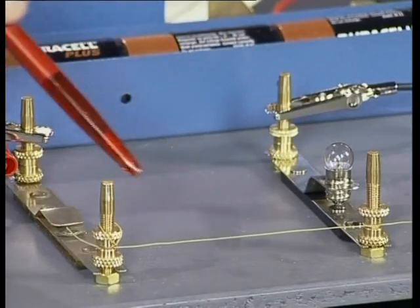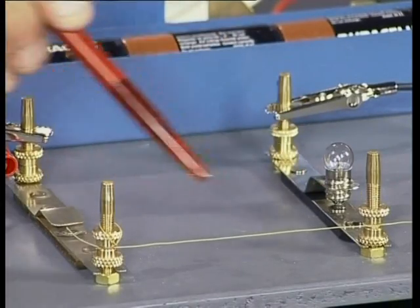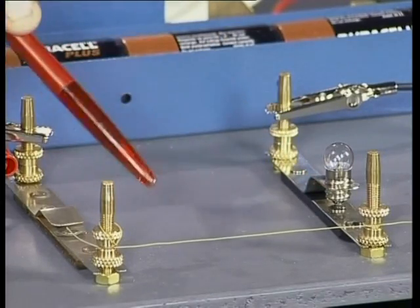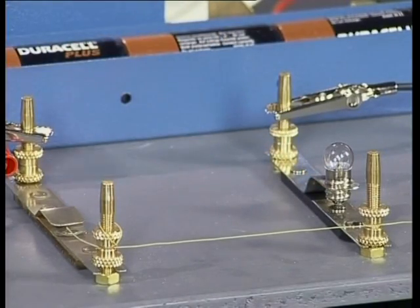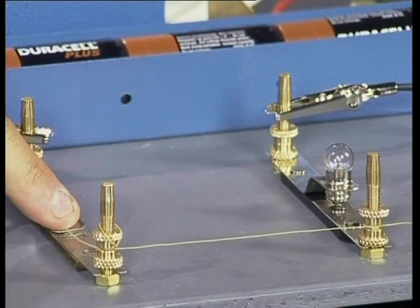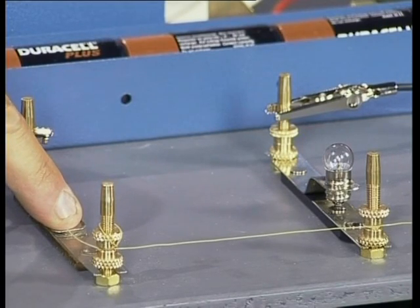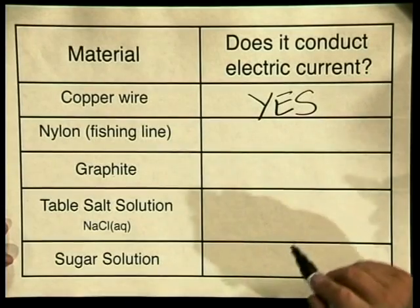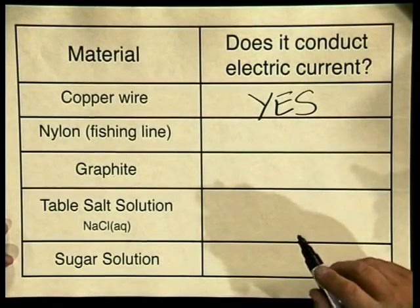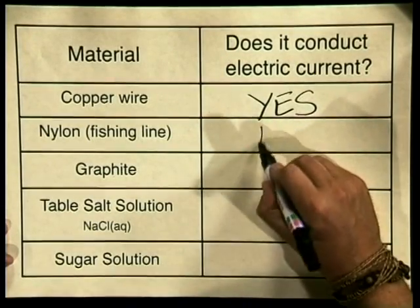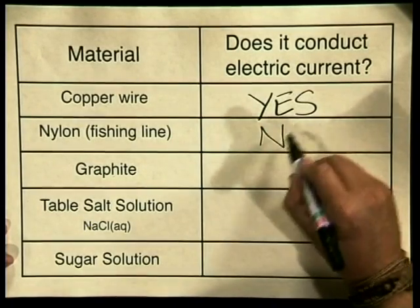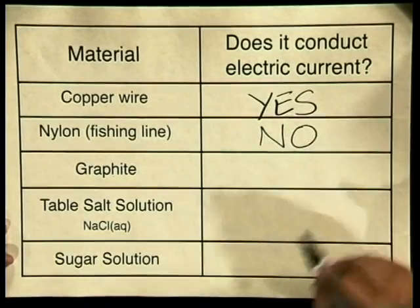Here is my second material, it's nylon fishing line. I now close the switch. Notice that the lightbulb is not glowing. So does nylon fishing line conduct electric current? The answer there is no.